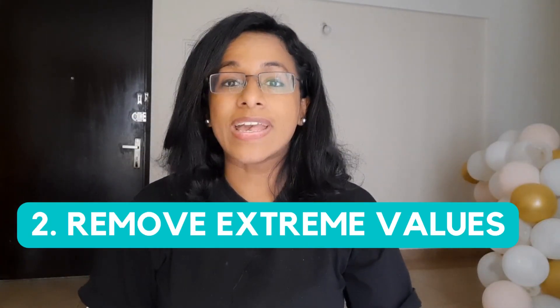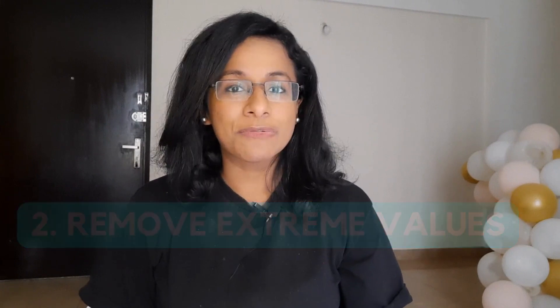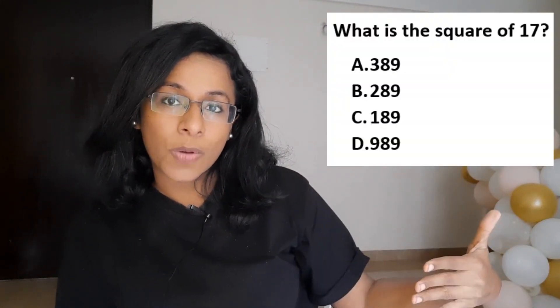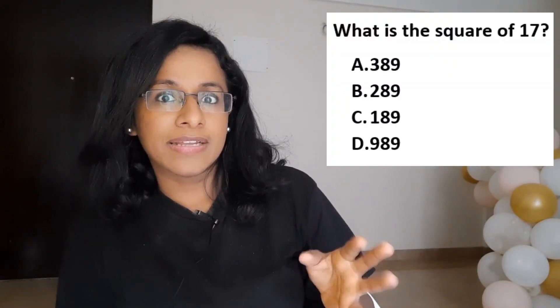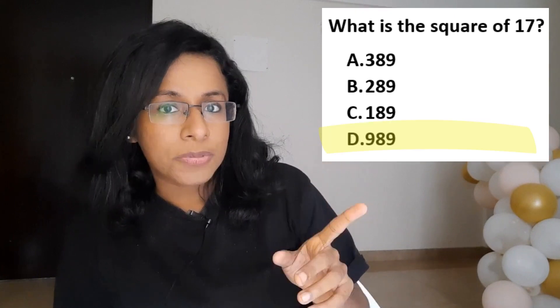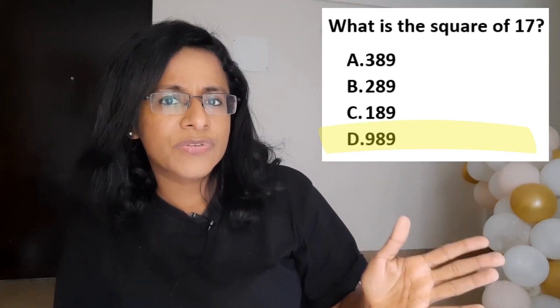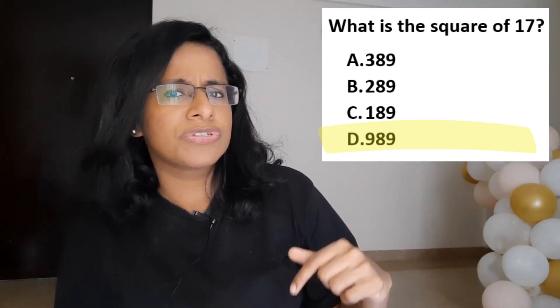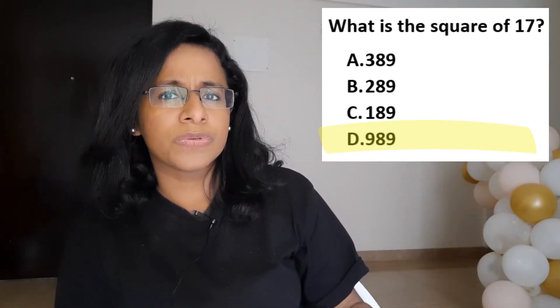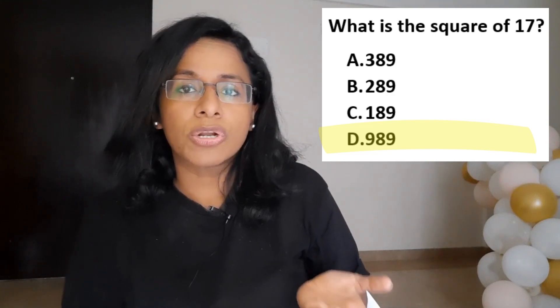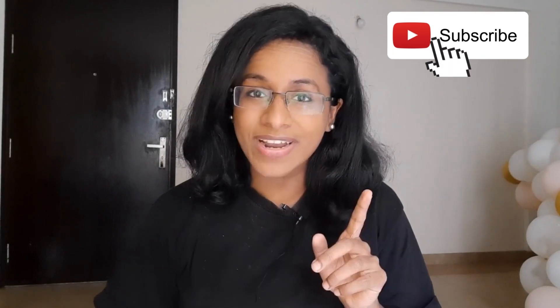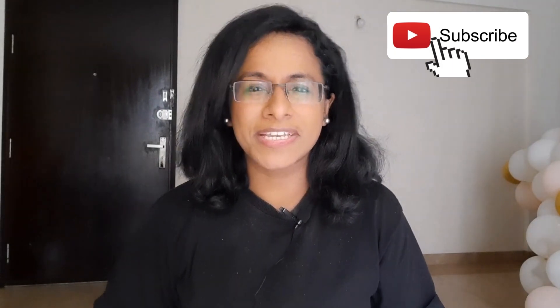Second is to remove extreme values. Look at this question and read the options. You can see that option D has an extreme value which is not even close to options A, B, and C, so it is automatically the wrong answer and you can eliminate it.